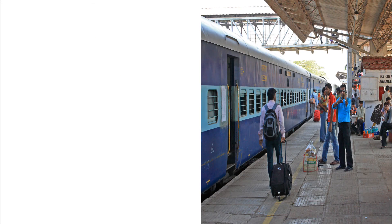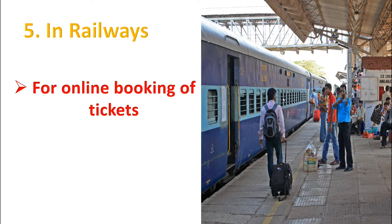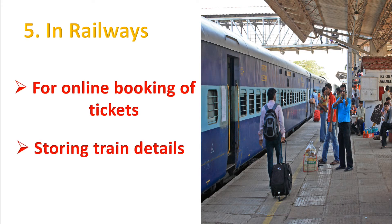A very familiar place for you — in railways! Have you seen computers at a railway station? Computers are used for online booking of tickets. For storing train details: train number, train name, train timings, and from which station to which station the train goes — all the train details are stored in the computer.